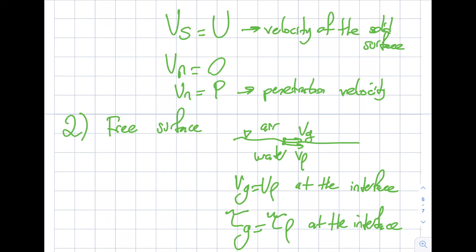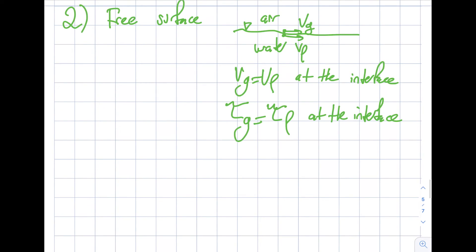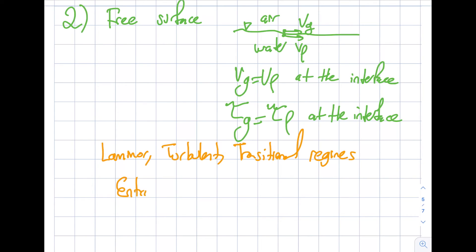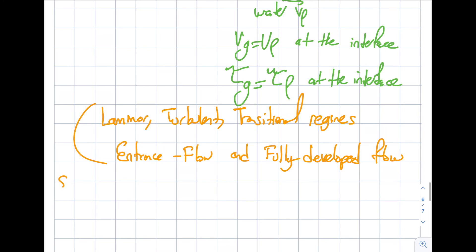In addition to boundary conditions, I need to cover laminar, turbulent, and transitional flow regimes, as well as entrance flow and fully developed flow. I have a video on this — Video 11.1, which is on viscous flow in pipes. Please refer to that. In this course, I will assume fully developed flow, so it's important to understand what that means when solving for velocity profiles in a pipe.